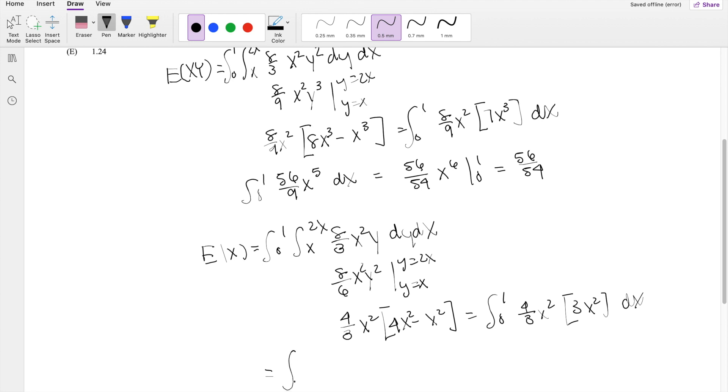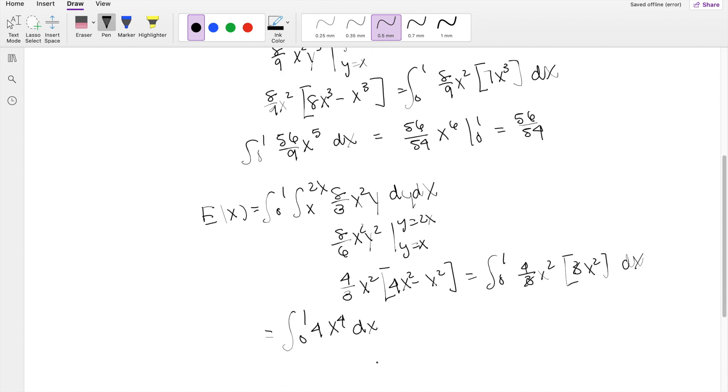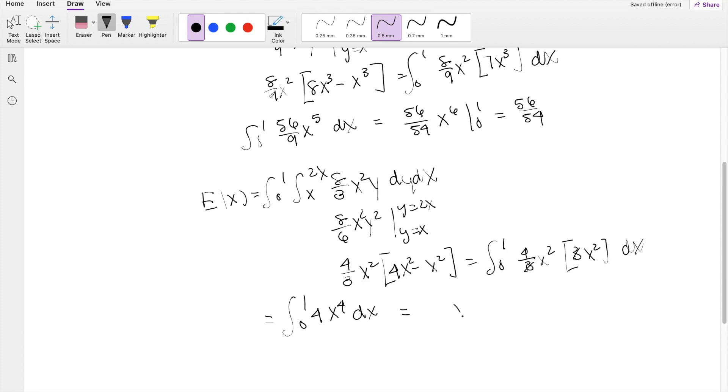Simplifying it down a little bit, you get 0 to 1. The 3s here cancel out, so you're left with 4x to the fourth dx. Integrating that sucker out, you get x to the fifth over 5, so 4 over 5, integrating from 0 to 1. So you get, this is equal to 4 fifths, because the lower limit just gives you 0.